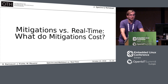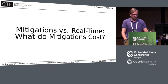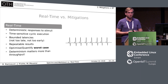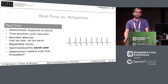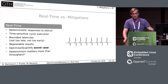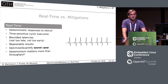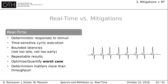What do those mitigations cost? Before I explain the measurements we did, I would like to refresh what real-time actually means. On real-time systems, in contrast to desktop or server applications, determinism matters — deterministic response to certain stimuli, time-sensitive, reoccurring, cyclic execution where we must give a response not too early and not too late. We have bounded latencies, a time window where we must give an answer. And in contrast to desktop and data center systems, we optimize for the worst case, not the average case — determinism matters more than actual throughput.